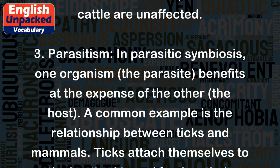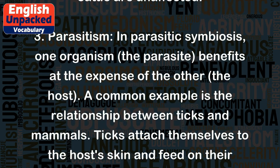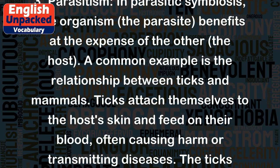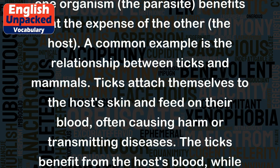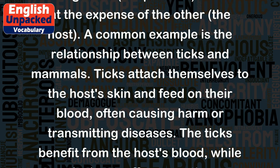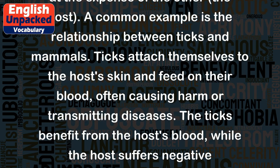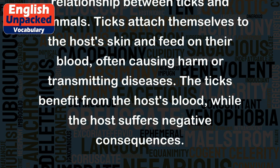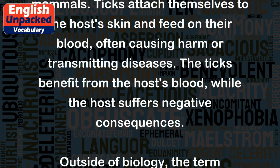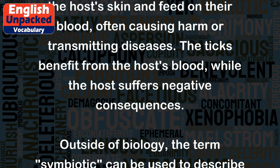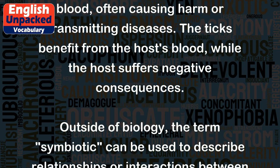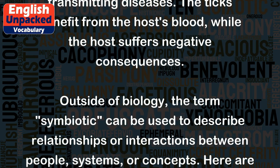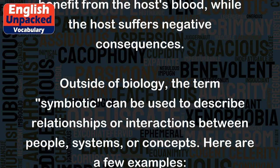3. Parasitism. In parasitic symbiosis, one organism — the parasite — benefits at the expense of the other, the host. A common example is the relationship between ticks and mammals. Ticks attach themselves to the host's skin and feed on their blood, often causing harm or transmitting diseases. The ticks benefit from the host's blood, while the host suffers negative consequences.